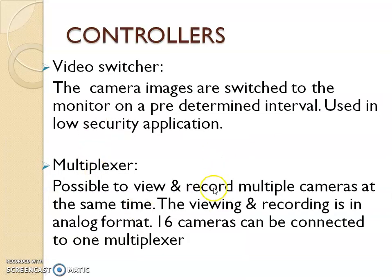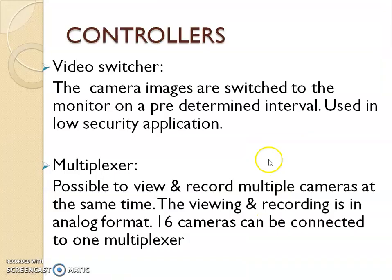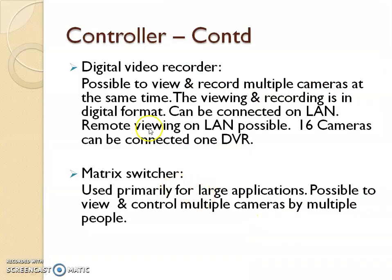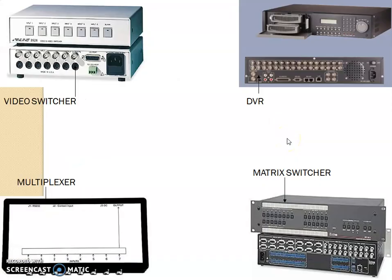Next is the multiplexer — with a multiplexer you will be able to see many images on one screen. For example, you can see a 4x4 grid of 16 images, 16 video feeds being seen in one screen simultaneously. The next component is the digital video recorder, DVR, which is used to record the information. And there is also the matrix switcher, where a digital video manager is used to control multiple cameras by multiple people at the same time.